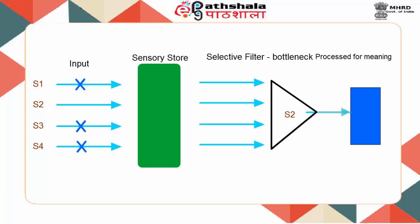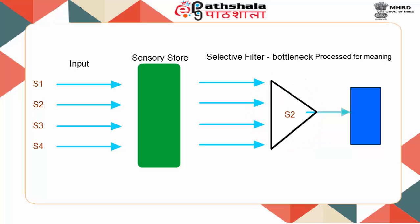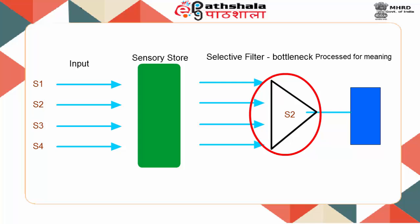Broadbent's theory maintained that the attentional filter is set to make a selection of what message to process early in the processing, before the meaning of the message is identified.